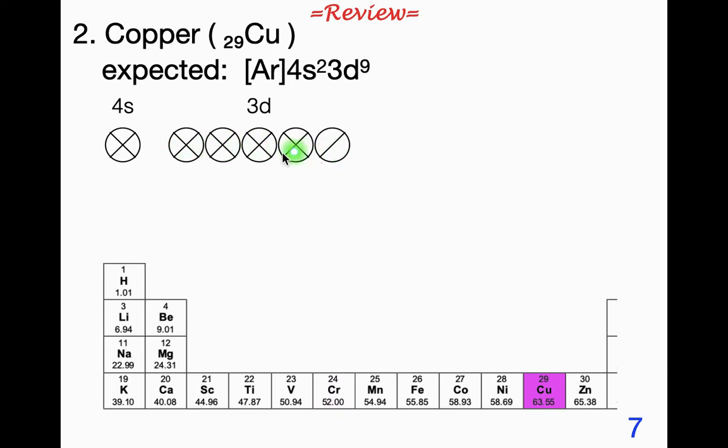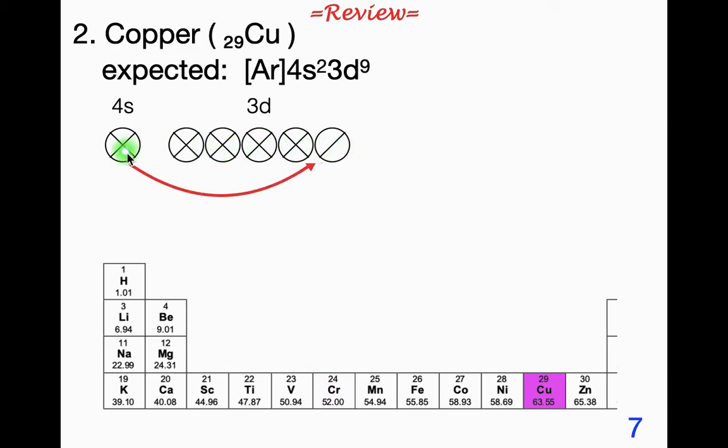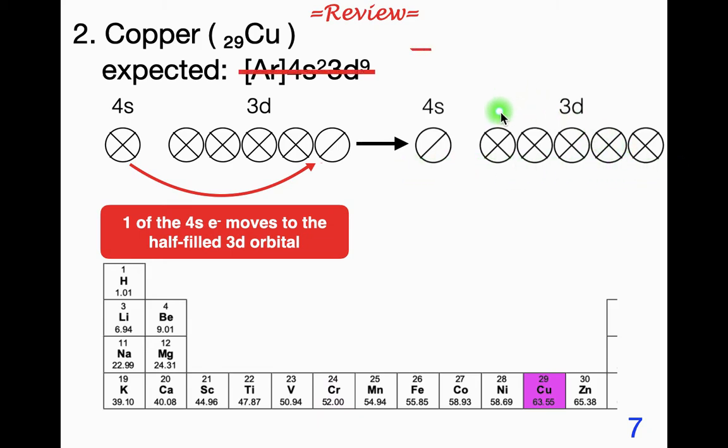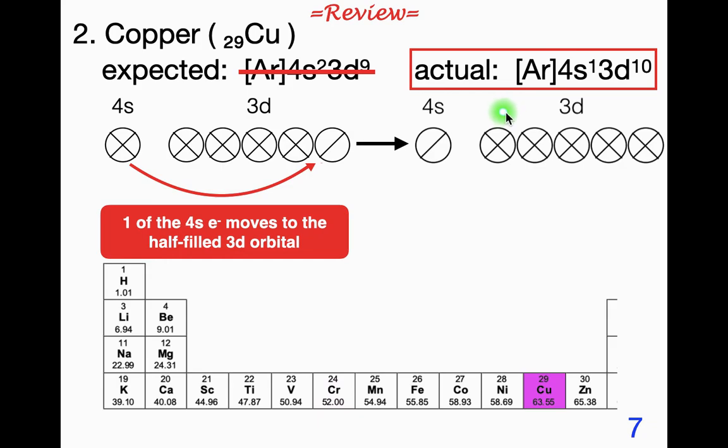It would be much more stable if the d was completely full. So you probably guessed one of the 4s electrons is actually found to, instead of being in the 4s, fills the 3d completely. So we end up with this as our orbital diagram, which means that the actual electron configuration is argon 4s1 3d10.